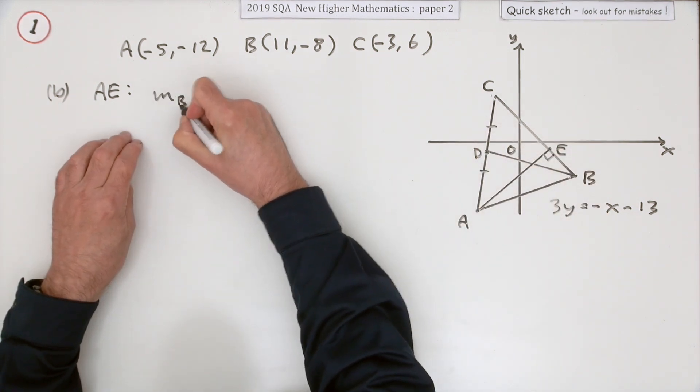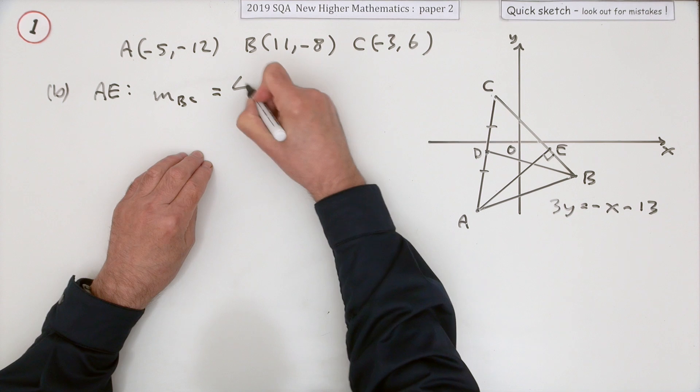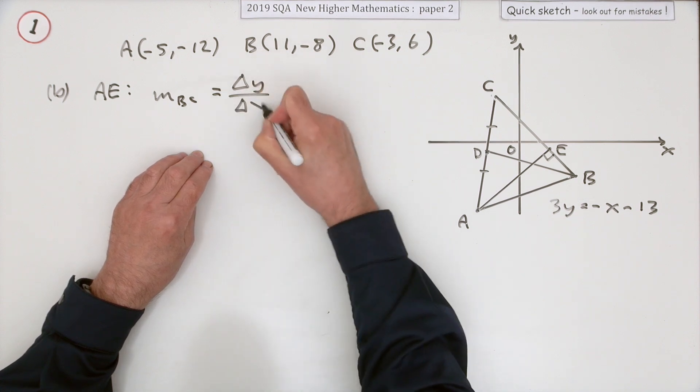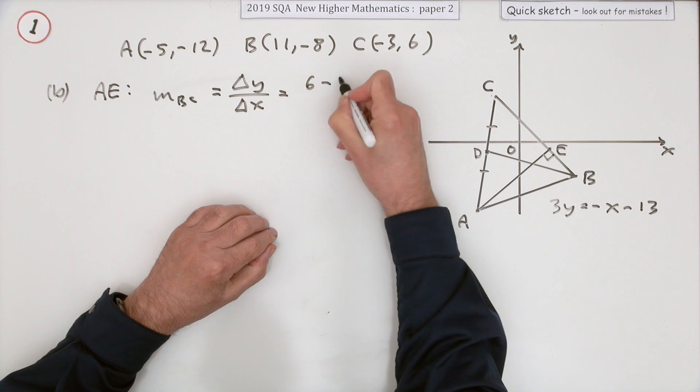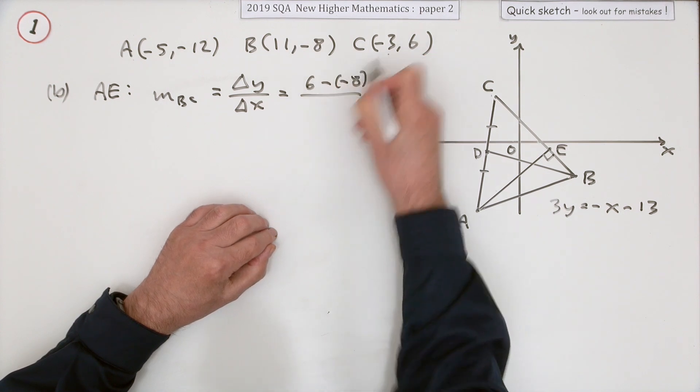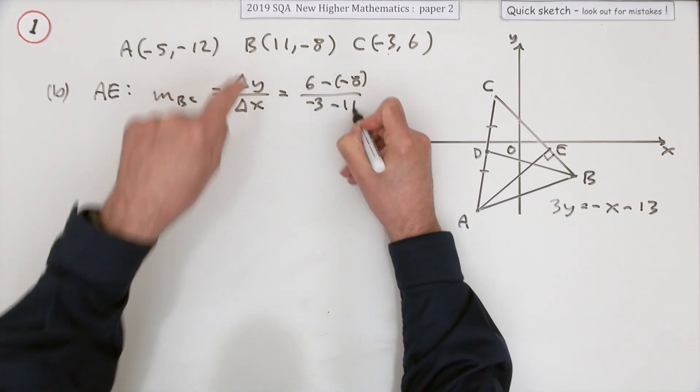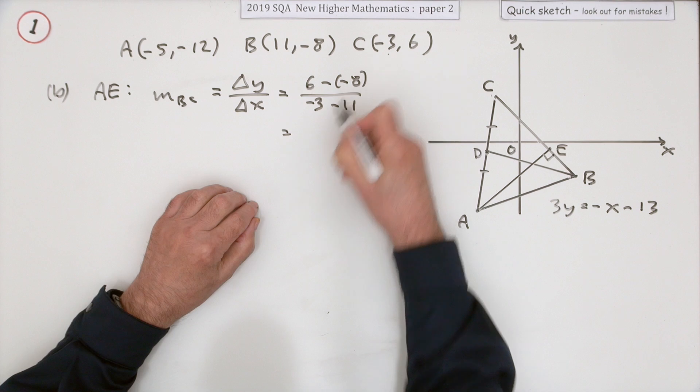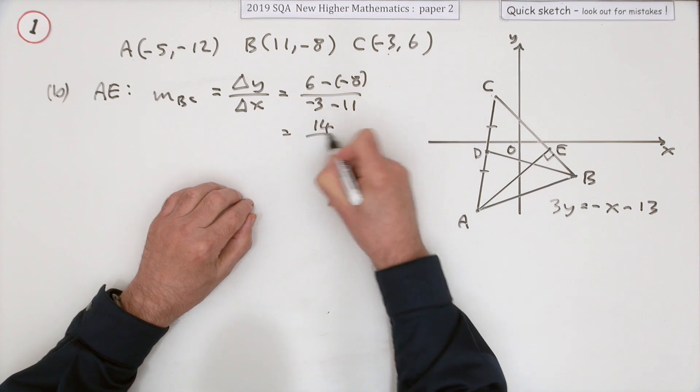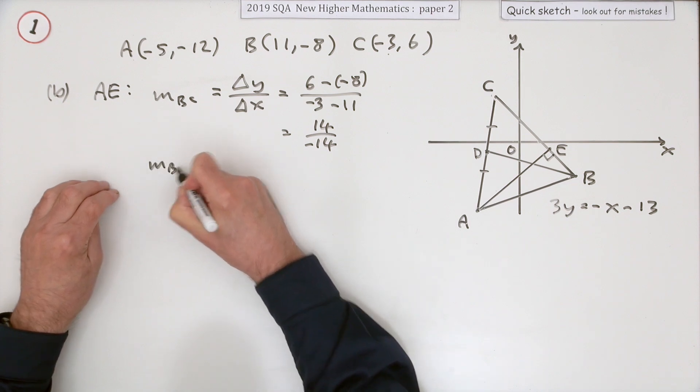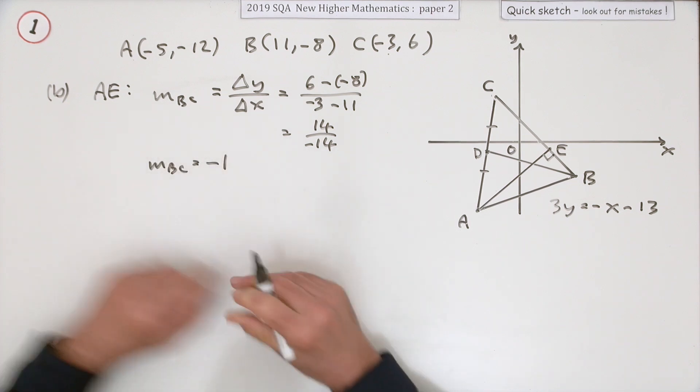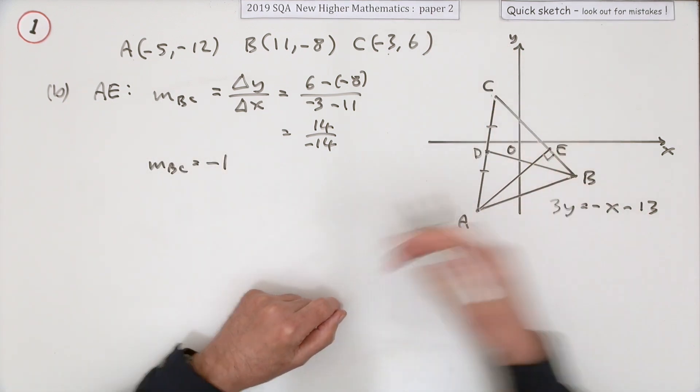You'll be able to get the gradient of this line by referencing the line BC. So get its gradient instead. What's the gradient of BC? It'll be the difference in the y's over the difference in the x's. 6 take away -8, -3 take away 11. So that's 14 over -14.